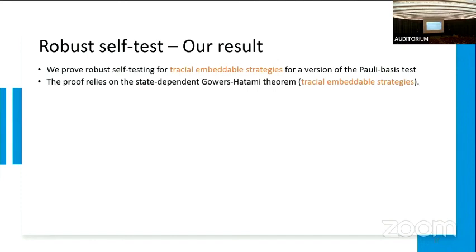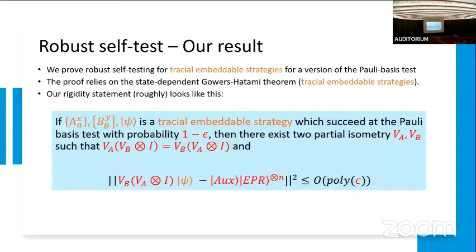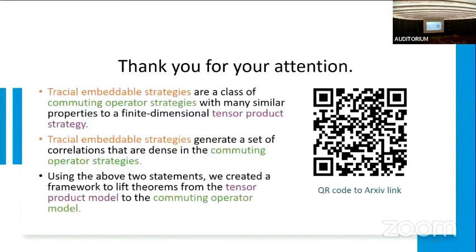But if we want to use this in the MIP-star context, we really care about something called robust self-testing, where instead of having the exact correlation, you want all strategy that approximately achieves such correlation to be close under the L2 norm. Because we don't really have a trace in the general commuting operator model, this is actually unclear in the commuting operator model. What we did is we proved a robust self-testing theorem for tracial embedded strategy instead. The proof actually relied on something called the state-dependent Gowers-Hatami theorem that was originally used by Vidick. Because we have the tracial trace and density matrix, we can generalize this for the commuting operator case. In fact, we have a regime that roughly looks like this, where if a tracial embedded strategy succeeds with a poly basis test with probability one minus epsilon, then there exists two partial isometries VA, VB, such that they have this sort of commuting relationship. And when you apply this to the state, it's actually a polynomial epsilon close to EPR append to some auxiliary states.